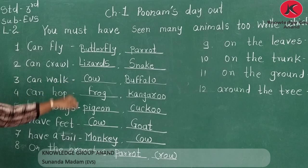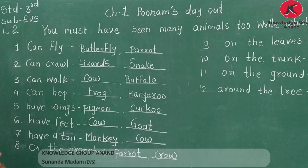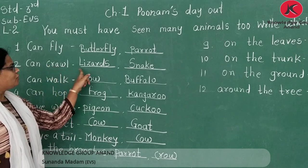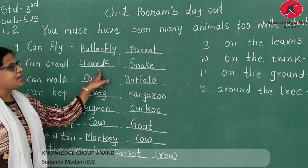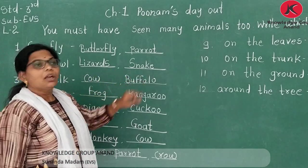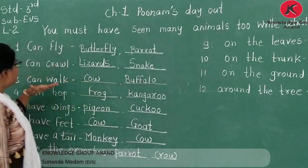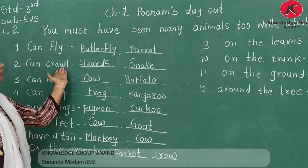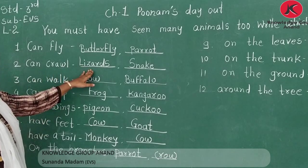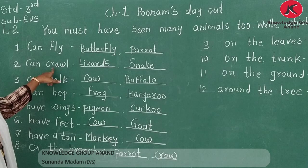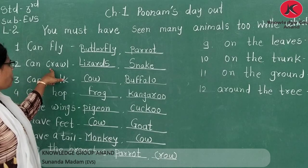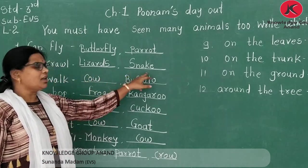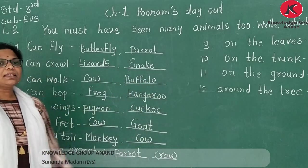Second is 'can crawl.' Crawling animals use their entire body to move along the ground — usmein woh apni poori body se chalte hain. Those animals are called crawling animals. Examples are lizard and snake.